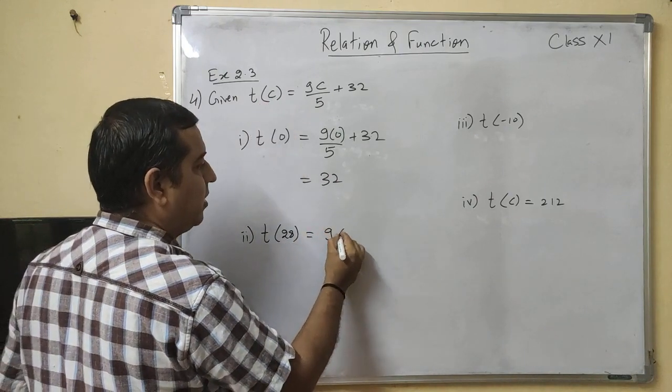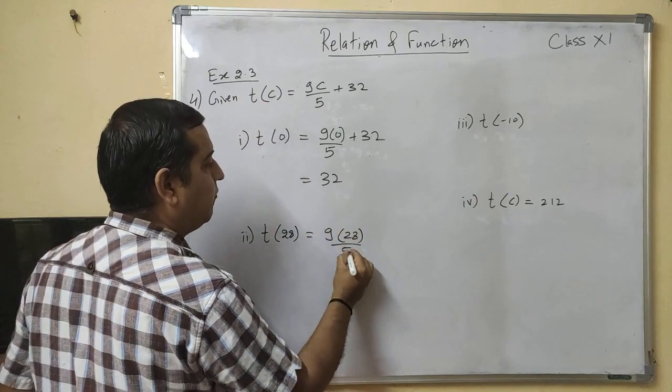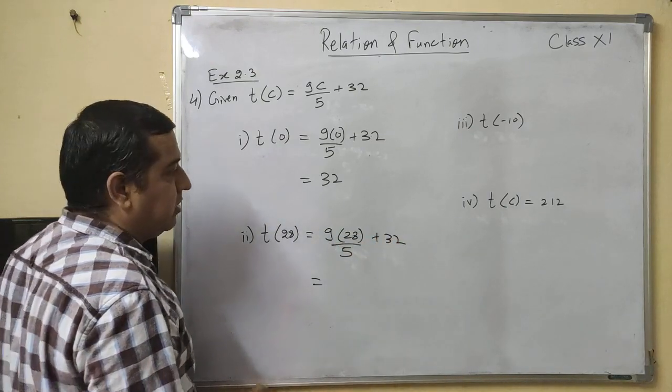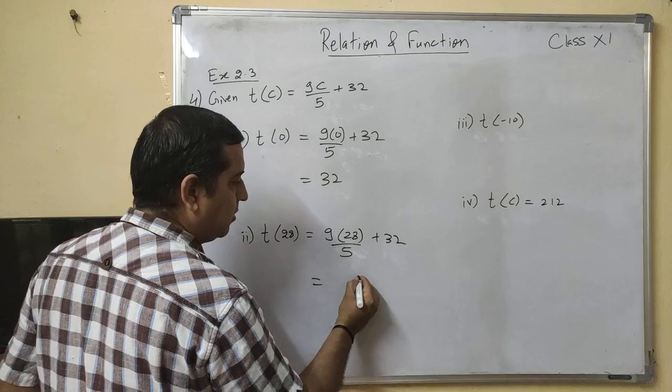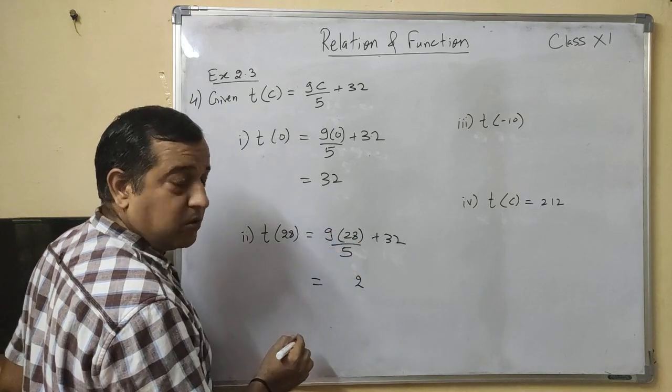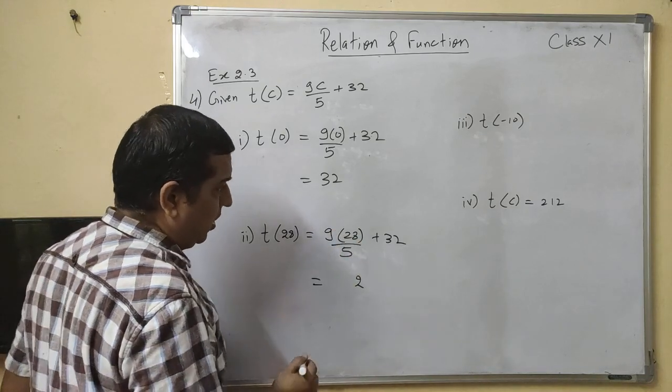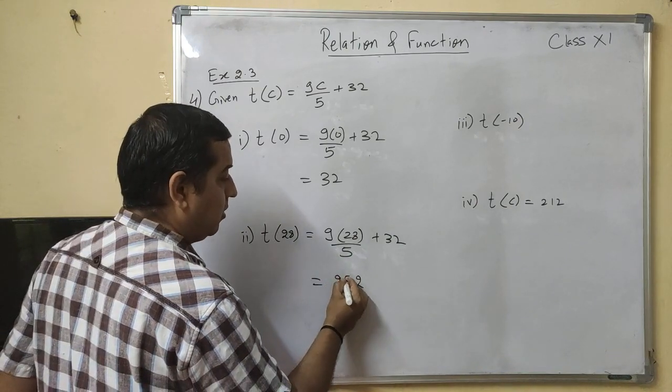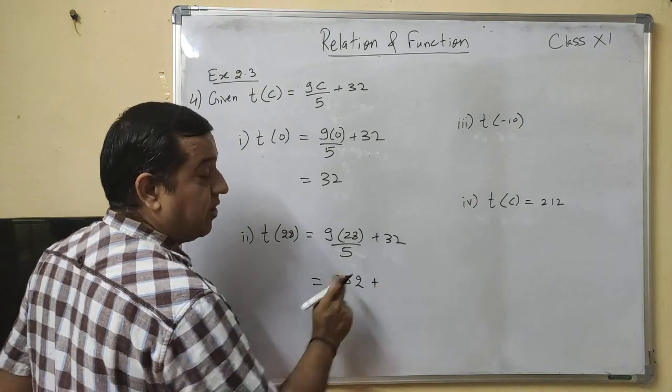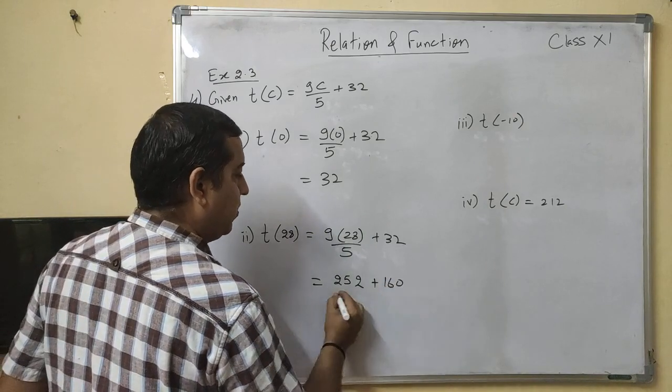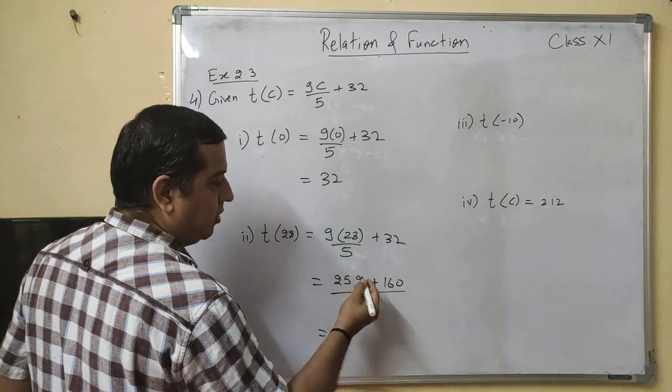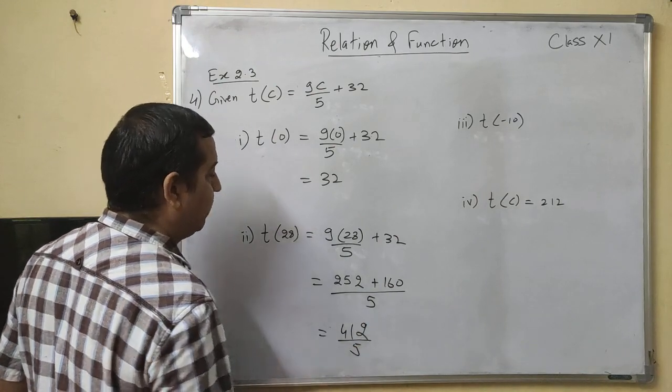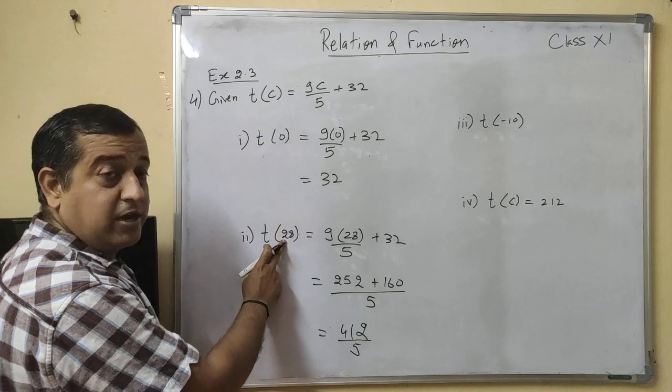Now in degree Celsius when it is 28, what will you take? 9 into 28 upon 5 plus 32. Do the multiplication: 9 times 8 is 72, carry 7. 9 times 2 is 18, 18 plus 7 is 25. Then 252 plus 5 into 32 is 160 divided by 5.